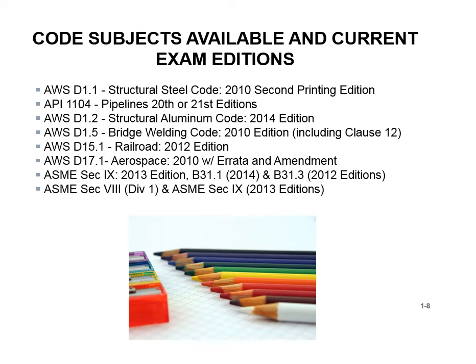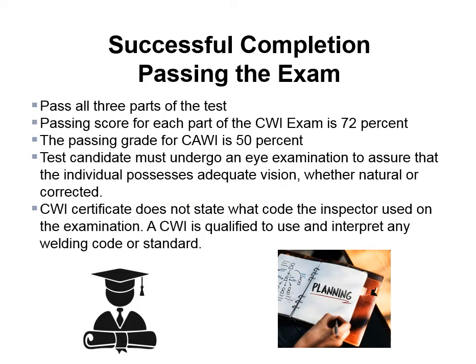To pass the CWI exam, you need to pass all three parts. The passing score for each part is 72%. The passing grade for a CAWI is 50%. The test candidate must also undergo an eye examination to ensure adequate vision, natural or corrected. Notably, the CWI certificate does not state what code was used on the examination — a CWI is qualified to use and interpret any welding code or standard.